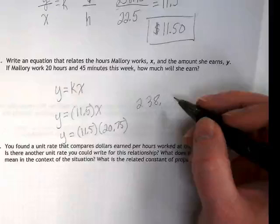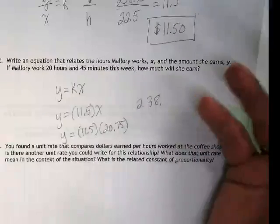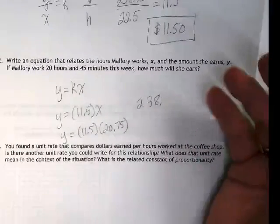I got 238.625. They're not going to pay her 0.625. They're going to pay her in dollars, right? And cents. What would we round that to?